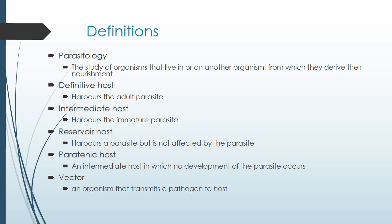Some definitions important to understand when talking about parasitology: parasitology itself is the study of organisms that live in or on other organisms. A definitive host is the person or animal that harbors the adult parasite. The intermediate host harbors the immature parasite and they usually leave to make their way to the definitive host to mature. A reservoir host harbors a parasite but is not affected by it. A paratenic host is an intermediate host in which no development of the parasite occurs. A vector is an organism that transmits a pathogen to a host.